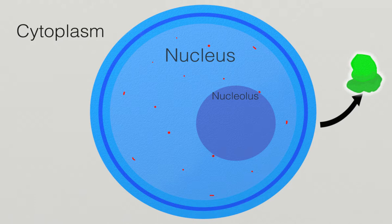So how is nuclear transport controlled to maintain the specialized environment of the nucleus? To answer this question, let's look at the structures of the nucleus that make this transport possible.